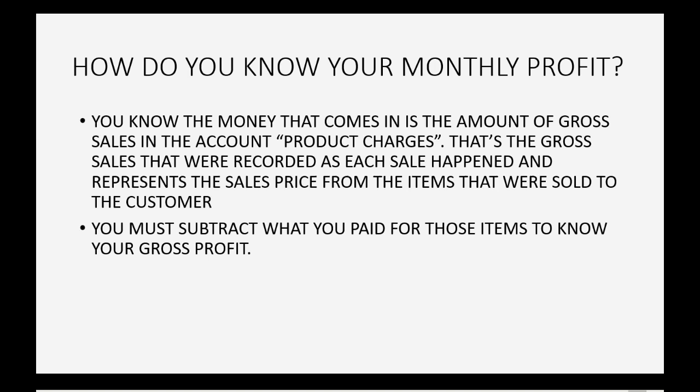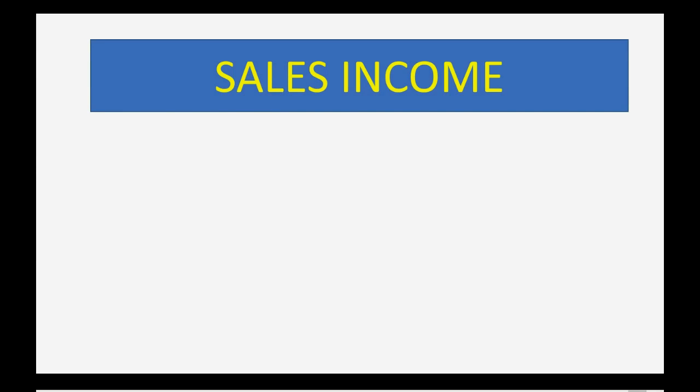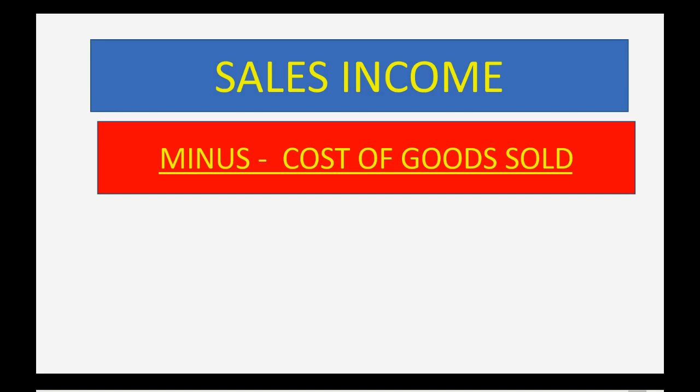You must subtract what you paid for those items in order to know your gross profit. The main calculation is: sales income minus what you paid for the merchandise given to the customer — which is cost of goods sold — equals your gross profit.